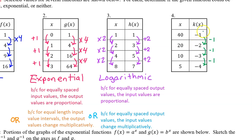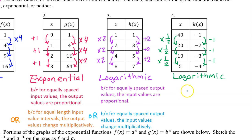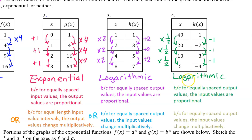For number four, k of x has equally spaced output values, so this might be yet another logarithmic function. Let's divide each input value by the previous input value to see if the input values change multiplicatively. 20 divided by 40 is 1/2, 10 divided by 20 is 1/2, and 5 divided by 10 is 1/2. This proves that k of x is logarithmic — because for equally spaced output values, the input values are proportional, or equivalently, the input values change multiplicatively.